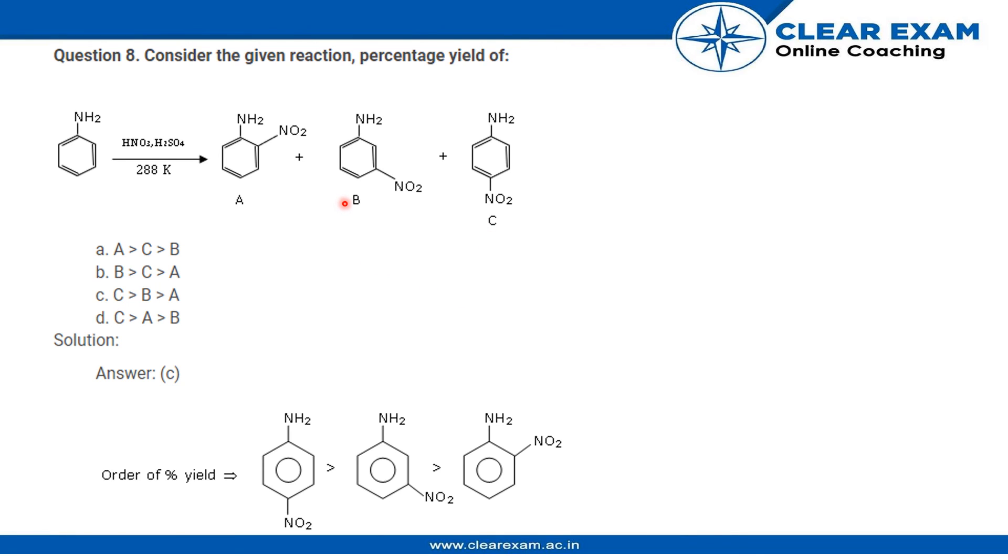Then we have B's yield, that is it is stable but not perfect, and then we have the least yield at A as it is unstable.